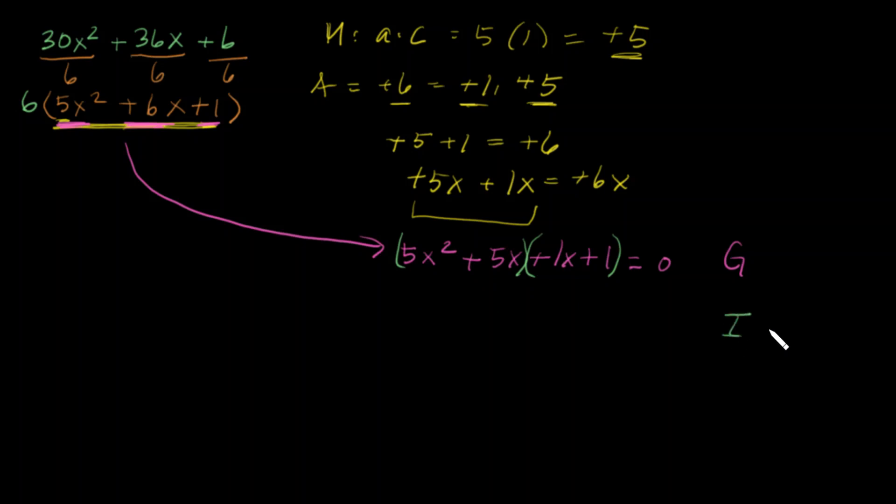Now IC stands for in common. So we look here and see what we have in common. We have a 5, we also have an x. When I take a 5x out, I'm dividing this by 5x, dividing it by 5x. We have an x plus 1.